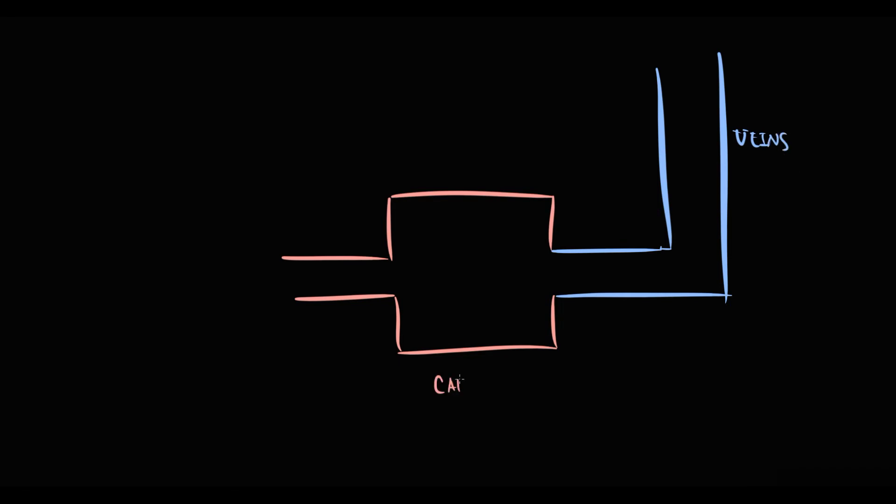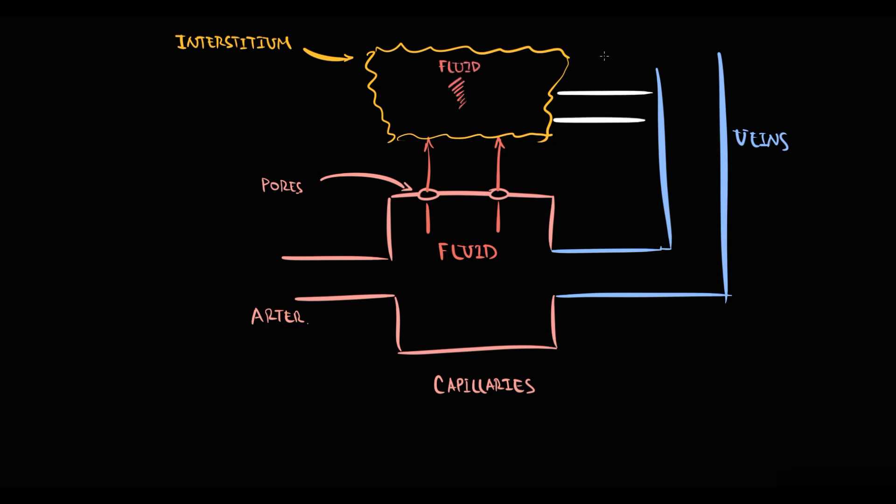We have arterial circulation that delivers blood to capillaries, veins that provide outflow of blood from capillaries, and capillaries that have pores. Through these pores in capillaries, fluid with nutrients can enter into the interstitial space where tissue receives vital substances. And then the lymphatic system drains the excessive amount of fluid from the interstitial space into the venous system.